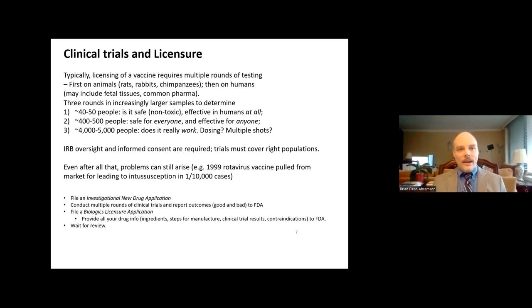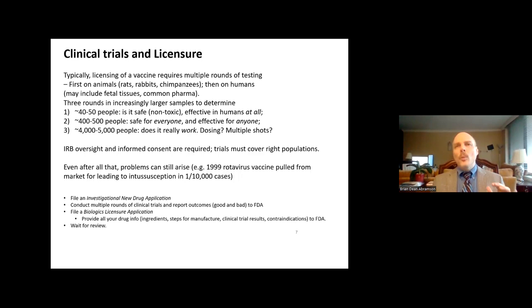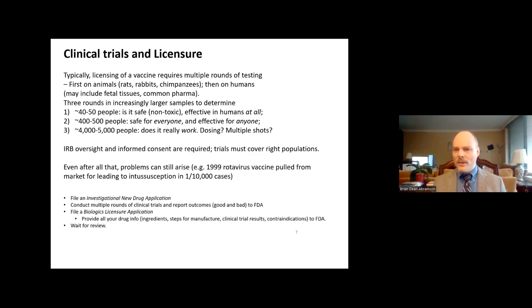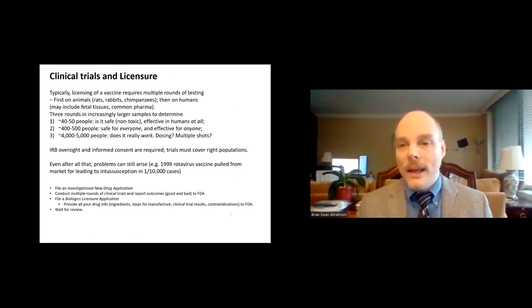We go through a clinical trial process. First we test on animals — there is currently a requirement for animal testing to make sure something is not harmful to living things. We try to test vaccines on animals that have an analog in their biology to humans — for example, pigs have very similar hearts to humans. It is worth noting that vaccines and most pharmaceutical products are at some point tested on fetal tissues. There are lines of tissues derived from abortions performed in Sweden in the 1960s that have been bred successively for decades, because you need to see how things will interact with human cells.